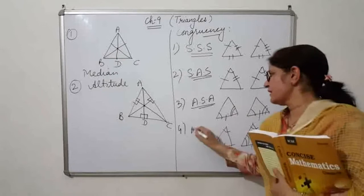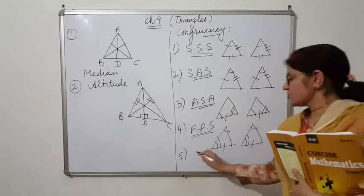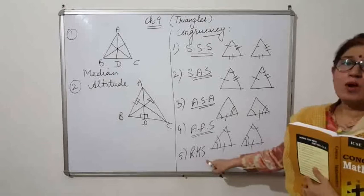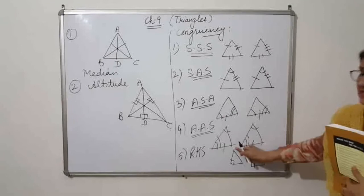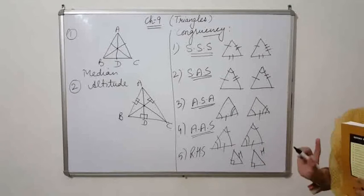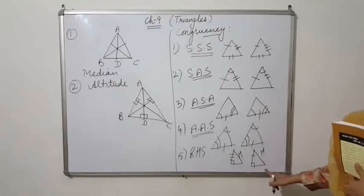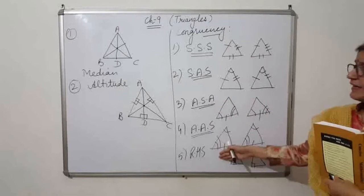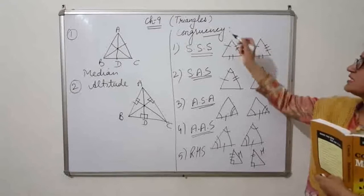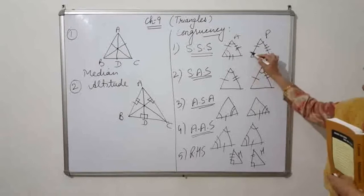The last property is RHS — right angle, hypotenuse, one side. If two triangles have a 90-degree angle, the same hypotenuse (the side opposite the right angle), and one equal side (perpendicular or base), then we follow the RHS property. After proving triangles congruent by any identity, the corresponding angles and remaining parts are also equal — for example, angle A equals angle P, angle B equals angle C, and so on.